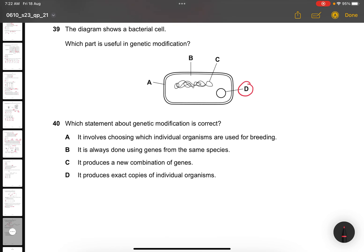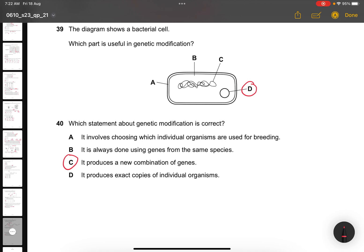Last question. Question 40. Which statement about genetic modification is correct? The answer for this would be it produces a new combination of genes. It does not choose which organisms, that is artificial selection. It always involves genes from the same species? No, it's not from the same species. It produces exact copies of any organism? It doesn't. So the answer is produces a new combination of genes.